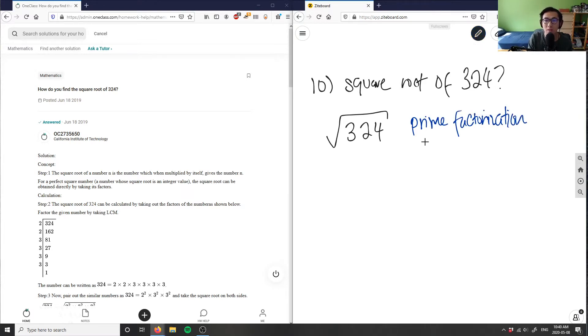So we have 324 here. What we're going to do is take out the 2 first because I know it's an even number. So I'm going to take out a root 2 here and do 324 divided by 2. 324 divided by 2 would be 162, so this would be root 162.